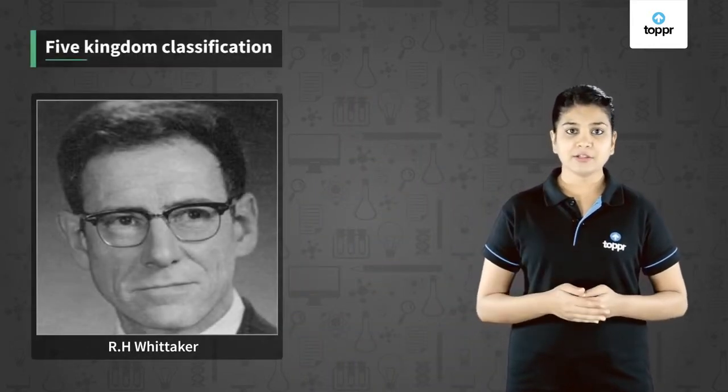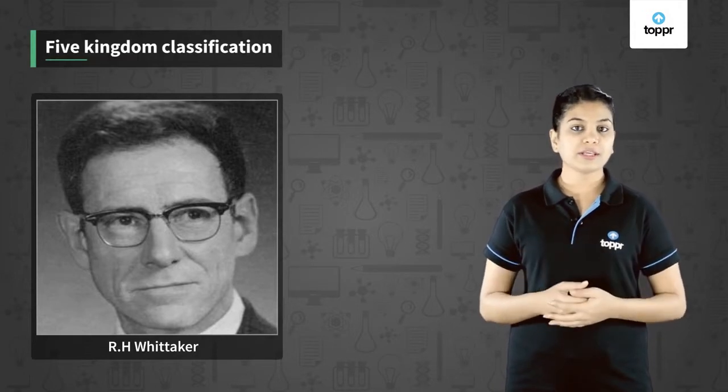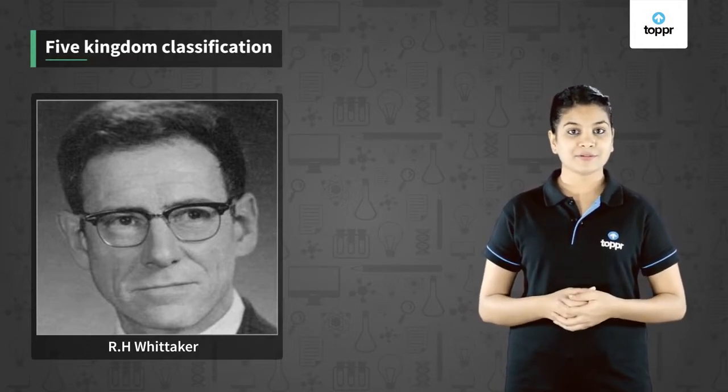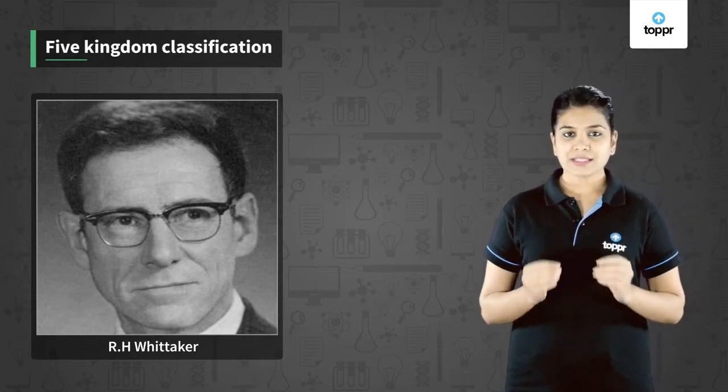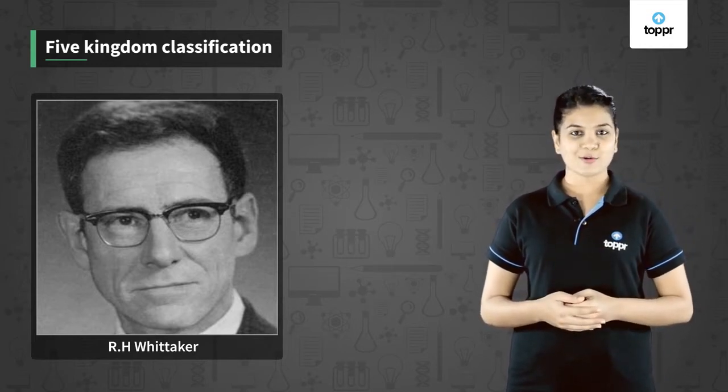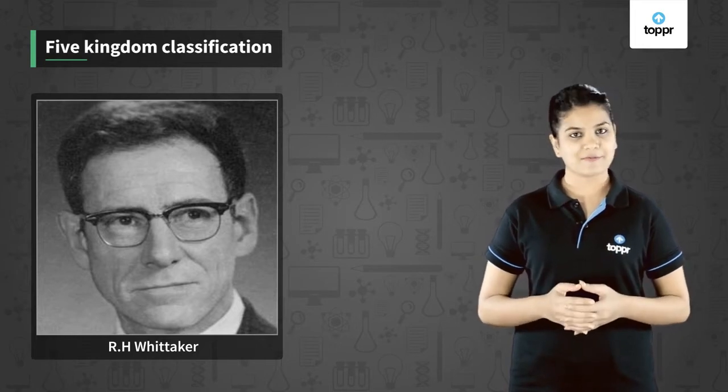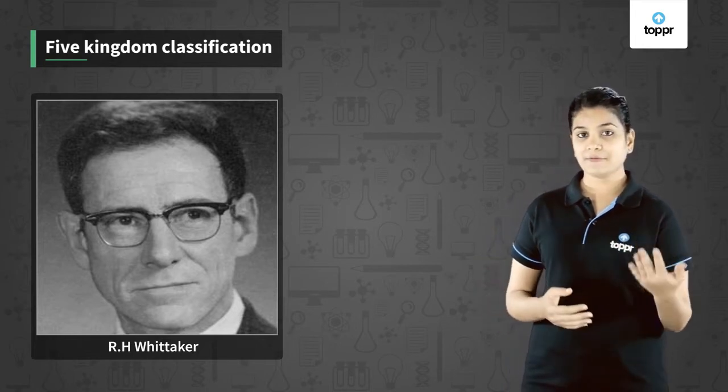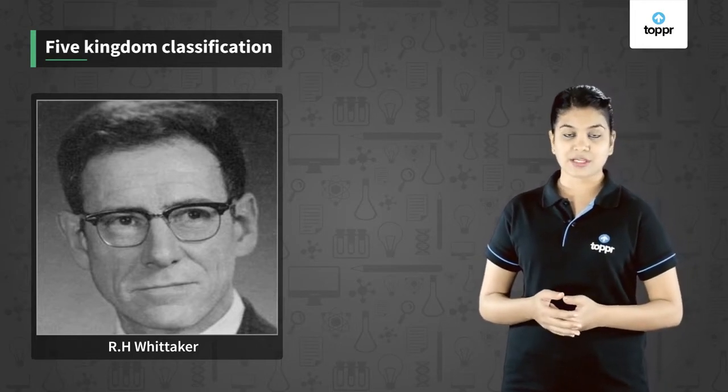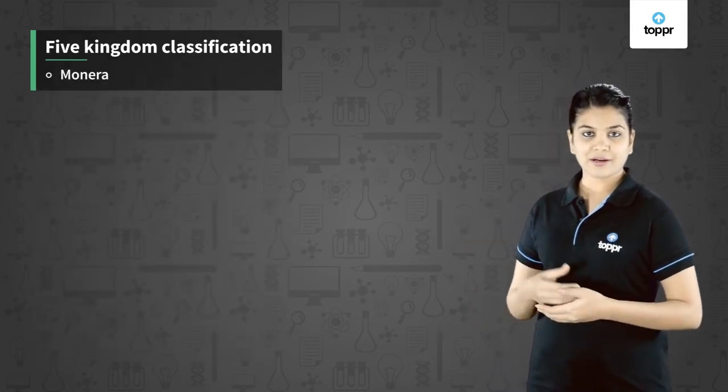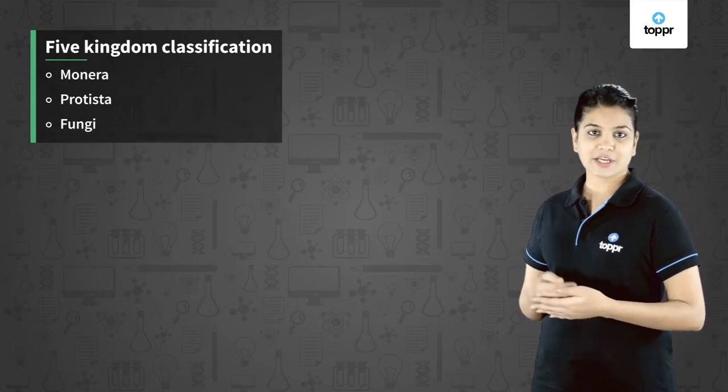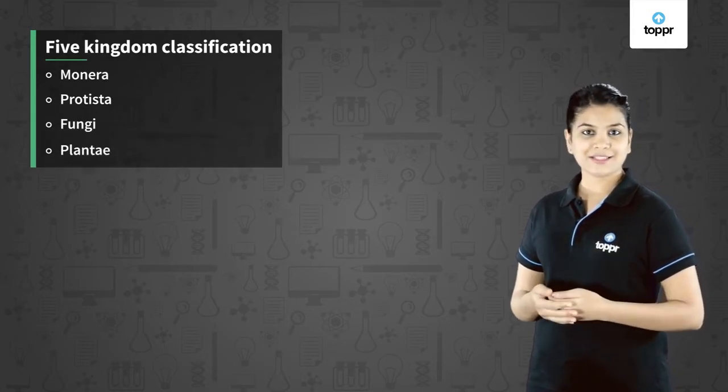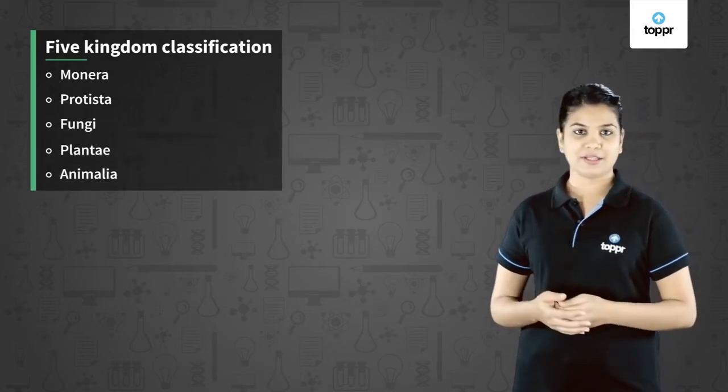Now Whittaker proposed five kingdoms to put all the organisms present in the world. Since it has five kingdoms, this system of classification is called five kingdom classification. The five kingdoms that he proposed are Monera, Protista, Fungi, Plantae and Animalia.